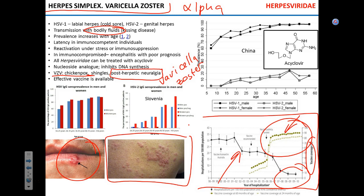HSV-1 causes labial herpes and HSV-2 causes genital herpes. Symptomatically there is no real difference — with genital herpes the lesions simply appear on the genital mucosa. The main reason people fear genital herpes is social stigma rather than any significant clinical difference.